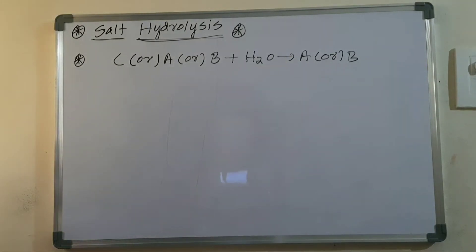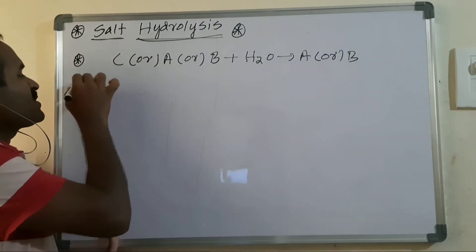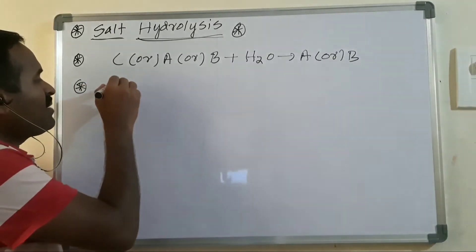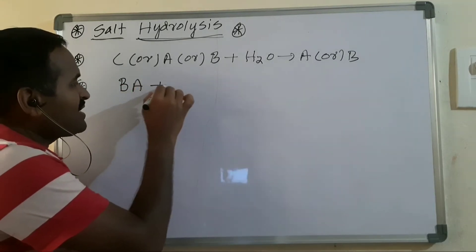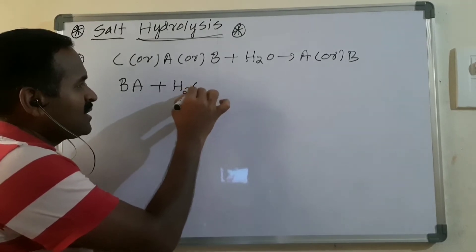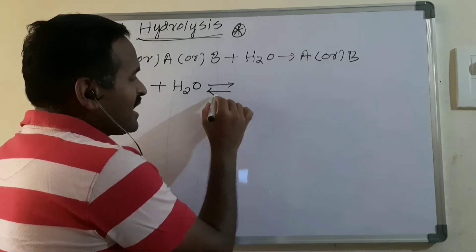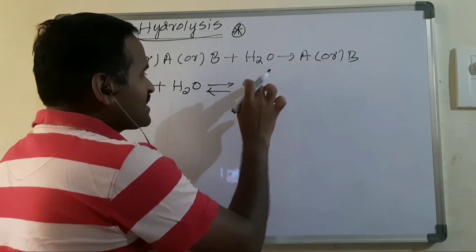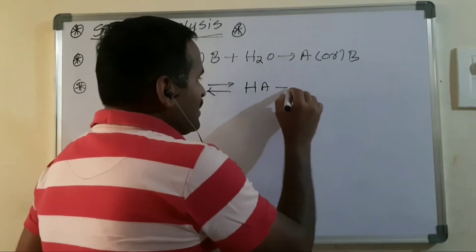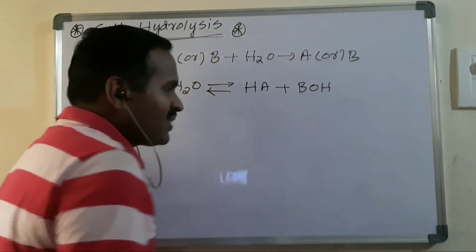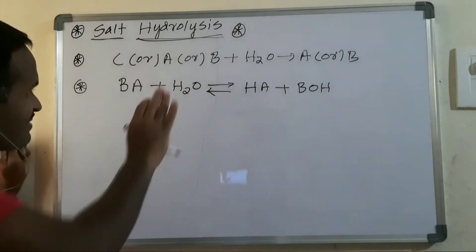Taking the general form of a salt as BA, when BA reacts with water, it converts into an acid HA and a base BOH. So BA is the general form of the salt that reacts with water to form acid HA and base BOH.